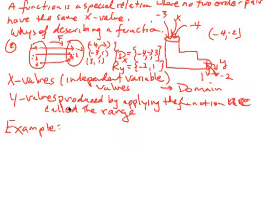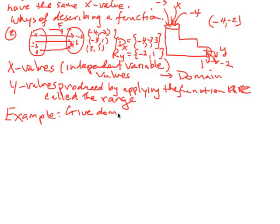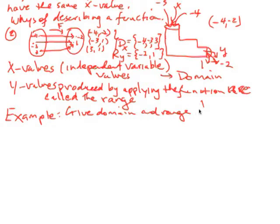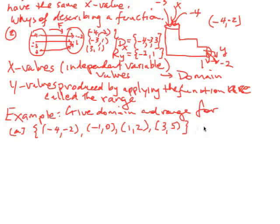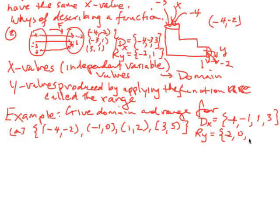Give the domain and range. Part A: suppose we have the ordered pairs (−4, −2), (−1, 0), (1, 2), and (3, 5). The domain — the x values — is simply the set {−4, −1, 1, 3}. The range — the y values produced — is {−2, 0, 2, 5}.